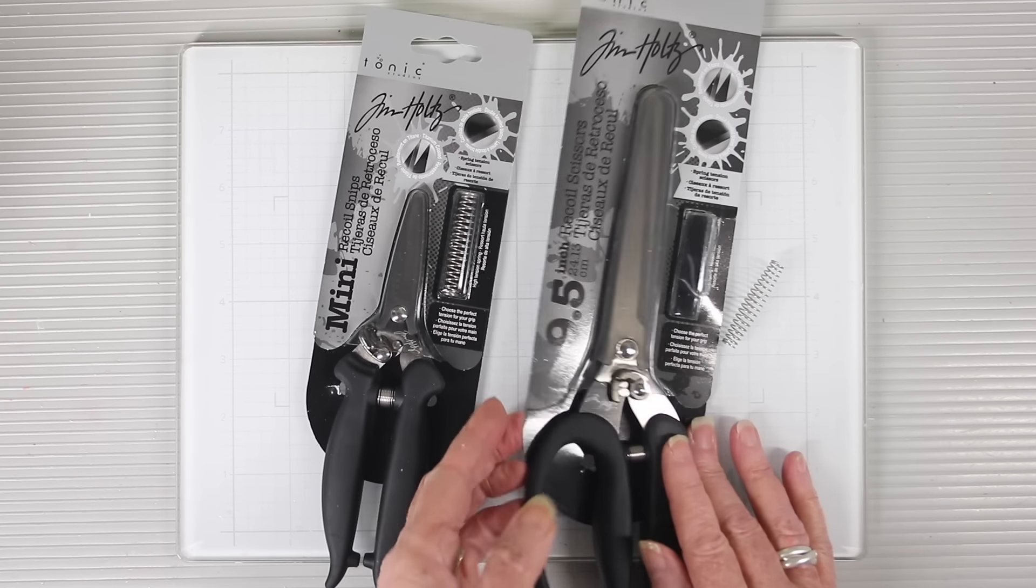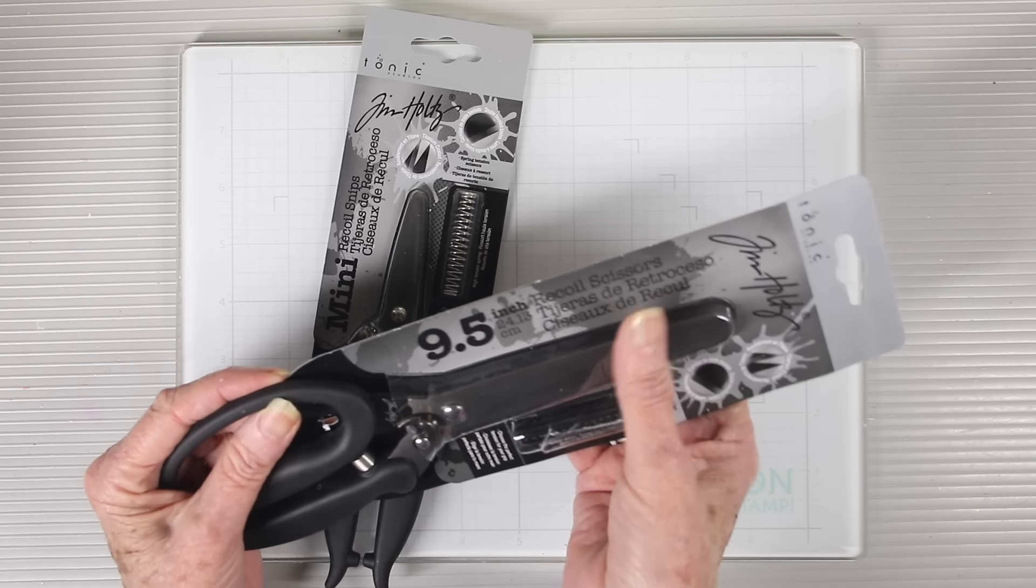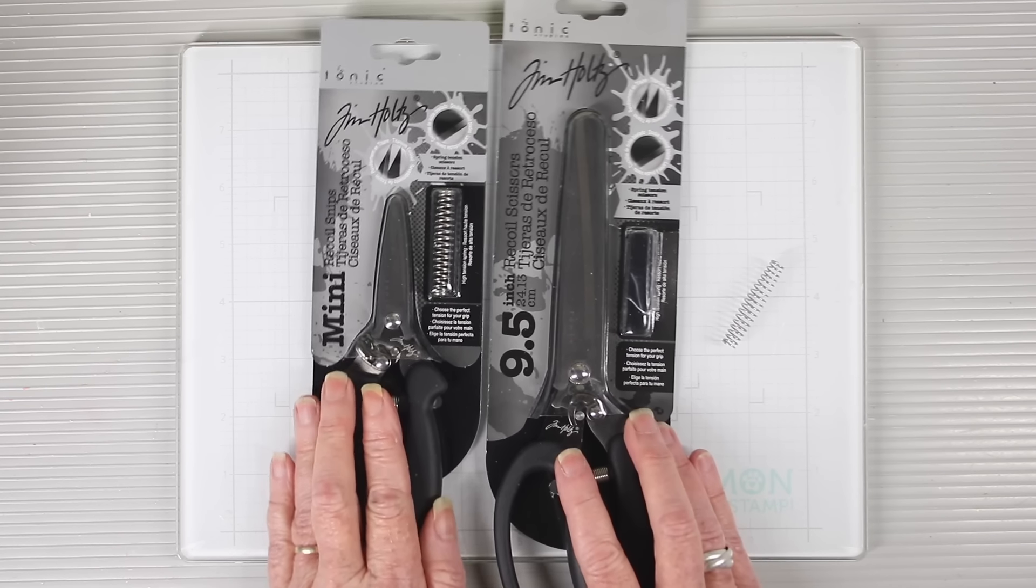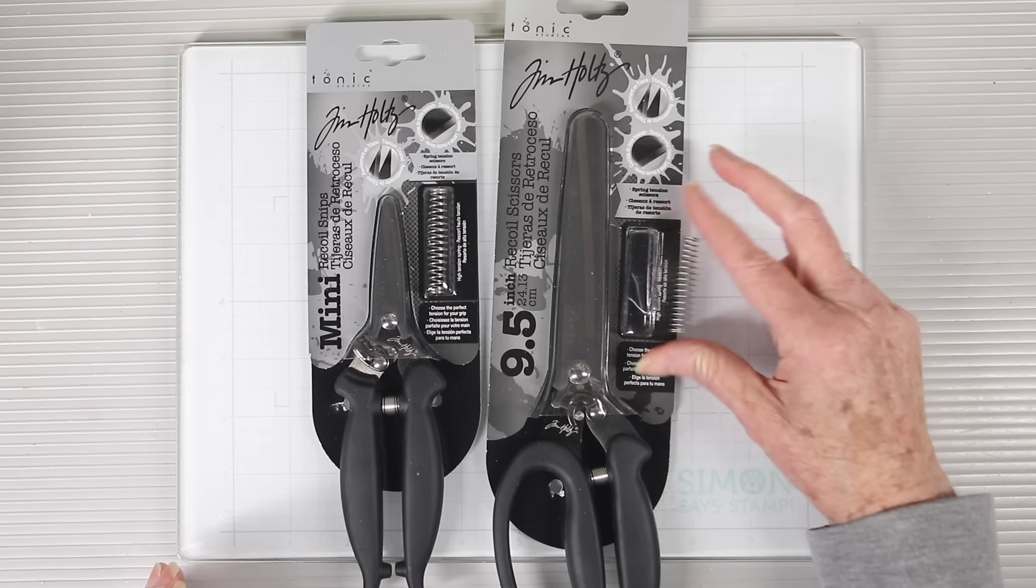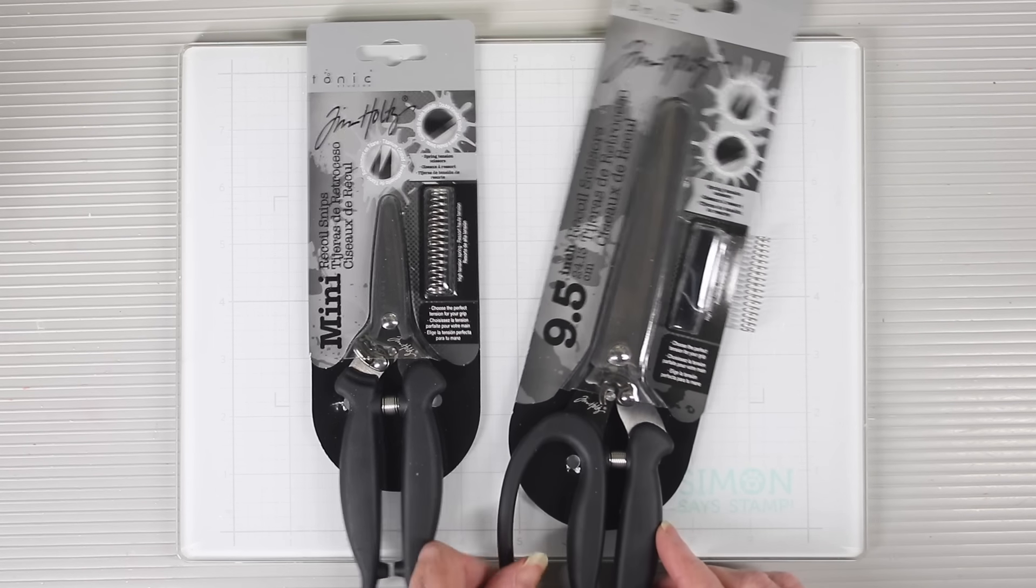The larger 9.5-inch scissors also have the titanium blade with the length of 4.3 inches. What you'll notice that's different about these packs is that there is an extra spring included. This additional spring has a stronger tension than what's included with your scissors.